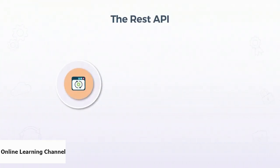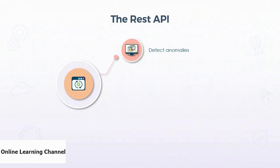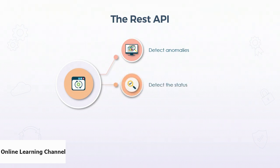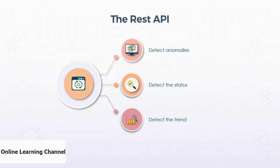The REST API is used by applications to make calls to the Anomaly Detector web service using JSON formatted data and retrieves the response for use by your app. The operation to find anomalies in data generates a model using the entire series — points before and after are used to determine what is an anomaly — and the detector provides an overall status of the time series. The status determination feature generates a model using historical points to determine whether the current point is an anomaly. Trend detection uses the entire series and determines whether a trend emerged based on points before and after a window.